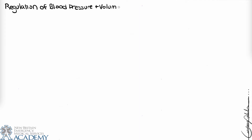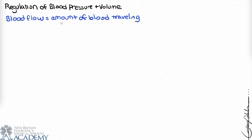Hi everyone. In this video we're going to talk about the regulation of blood pressure and blood volume in the human body. First, let's highlight some important terminology. Blood flow is the amount of blood that travels in a vessel over a period of time, measured in milliliters per minute. When talking about all blood flow at a given time across all vessels in the human body, we'd be referring to cardiac output.